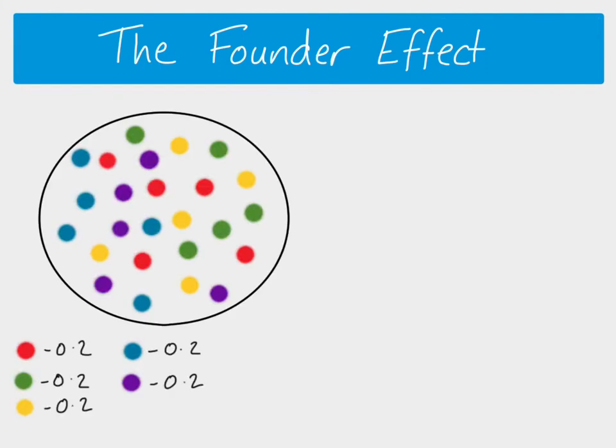The founder effect is a similar idea. Here's our population, and in this example the reason for the change in allele frequencies is that some individuals actually leave the population and move somewhere else, becoming the founders of a new population. This usually happens by chance — for example, some insects might be carried away on a wooden raft at sea and end up colonizing an island far from the original population.